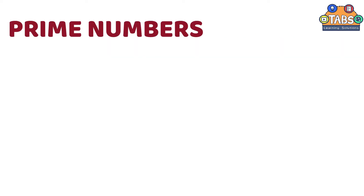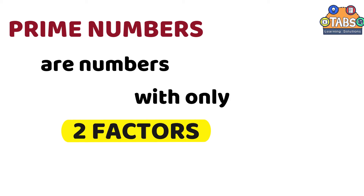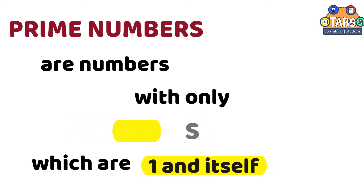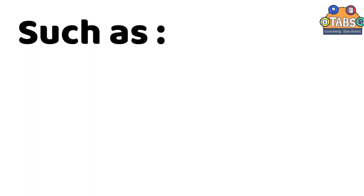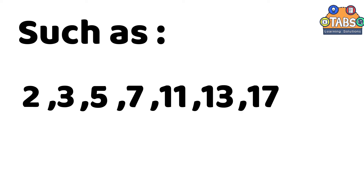Prime numbers are numbers with only two factors, which are one and itself, such as 2, 3, 5, 7, 11, 13, 17, 19, and so on.